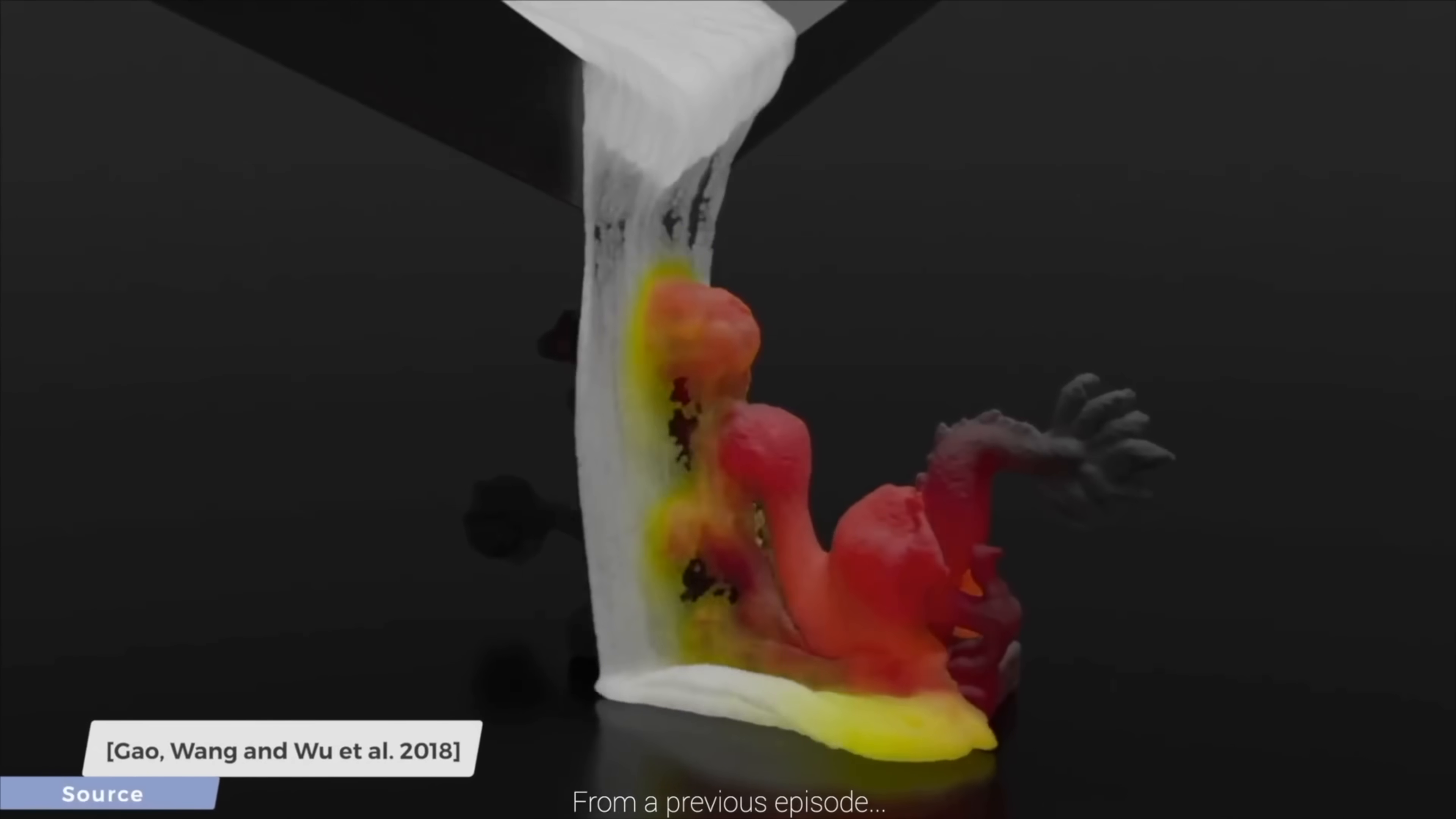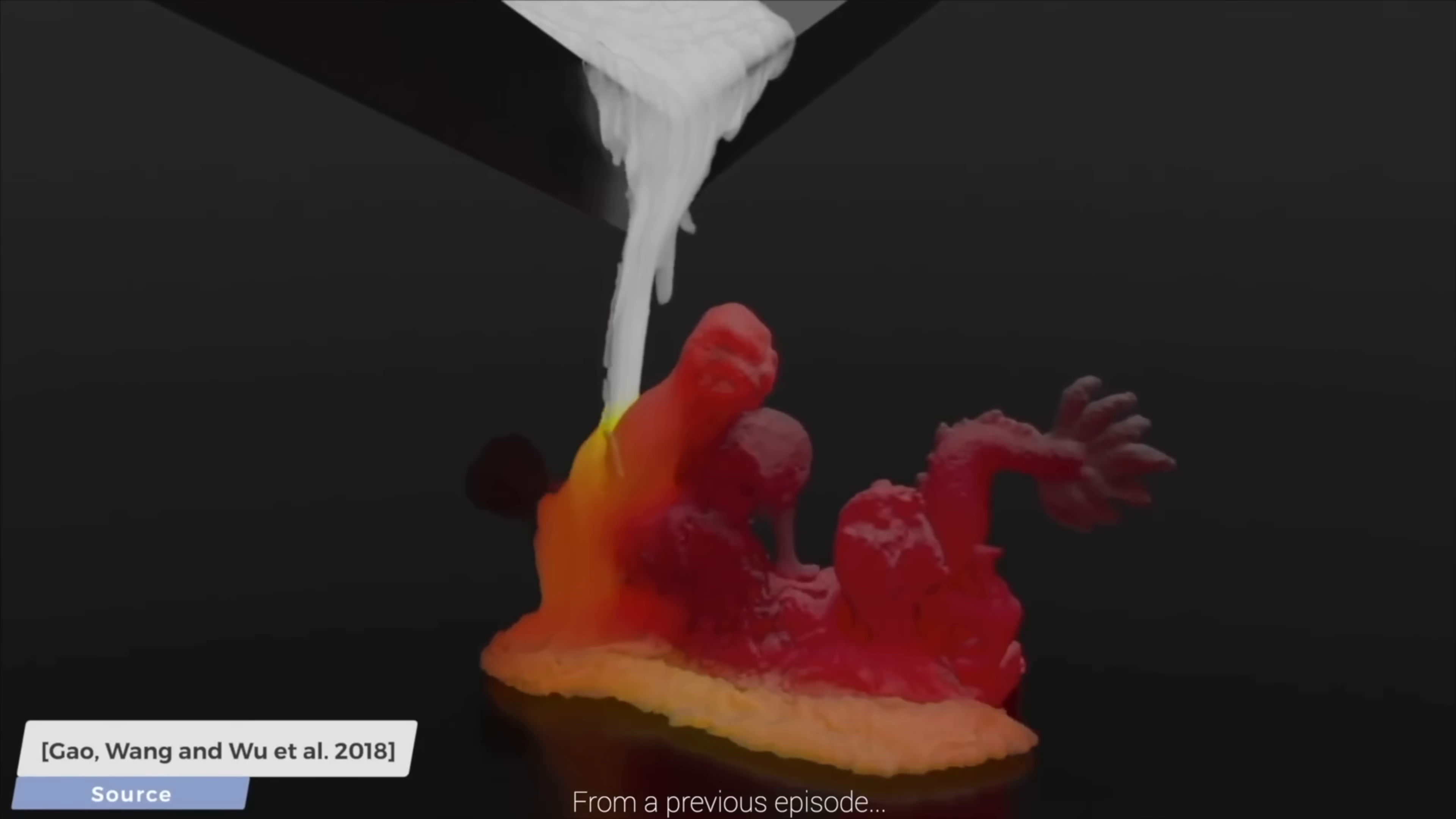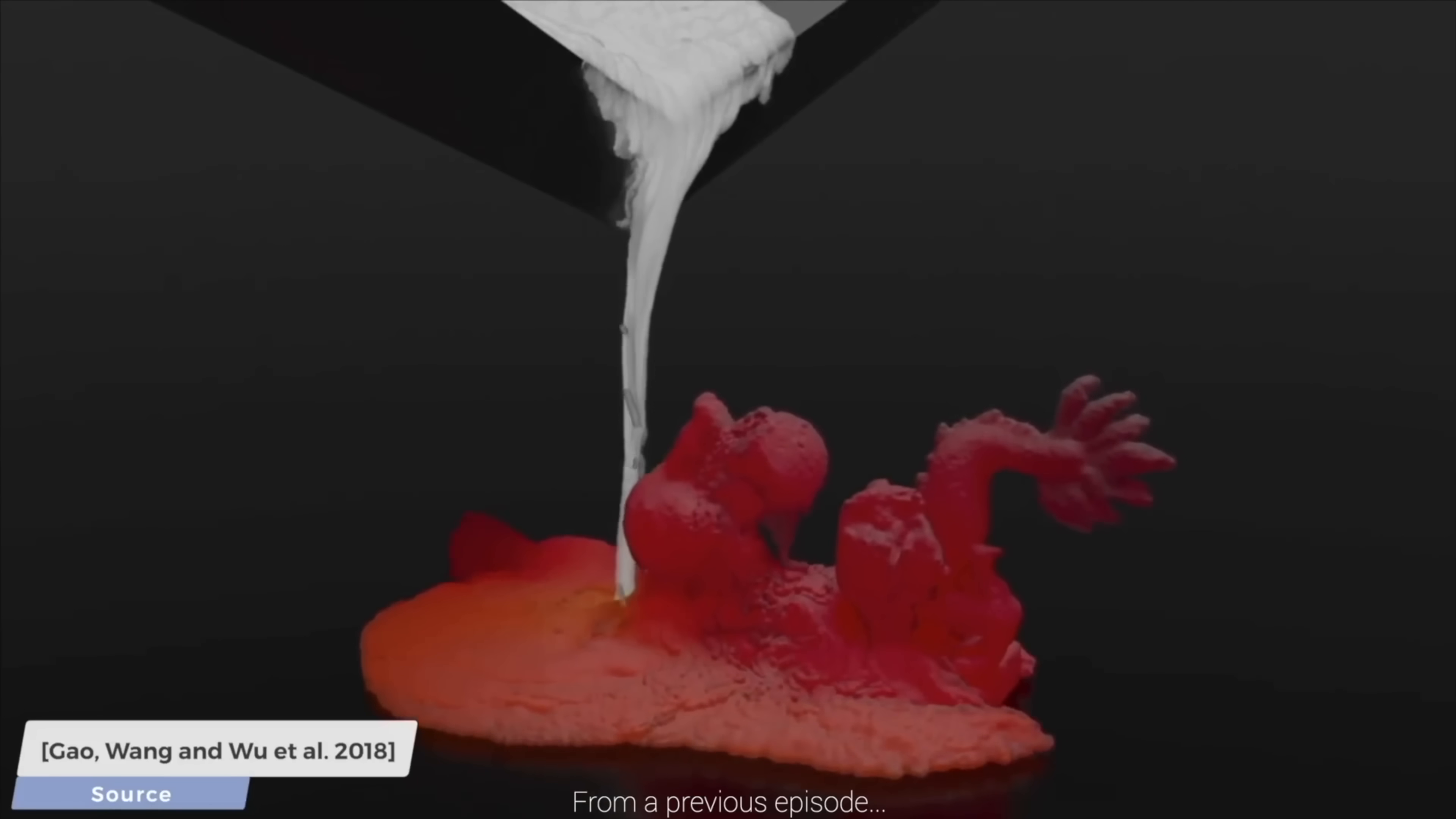To simulate all these, many recent methods build on top of a technique called the material point method. This is a hybrid simulation technique that uses both particles and grids to create these beautiful animations.